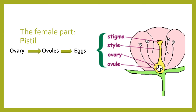The female part is called the pistil, and it is also made up of several parts. The top part is the stigma — the sticky part that traps the pollen containing the sperm. The style is the tube that sends the sperm down to the ovary. The ovary is a very important part because it is going to become a fruit. Inside the ovary are ovules, and the ovules contain the female sex cells — the eggs. So we have sperm inside the pollen and eggs inside the ovules, which are inside the ovary.